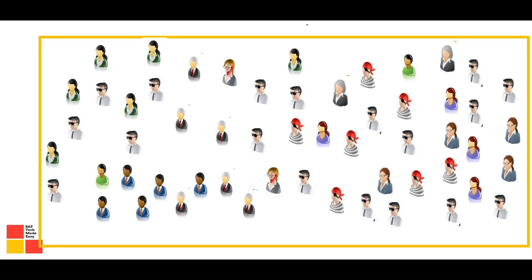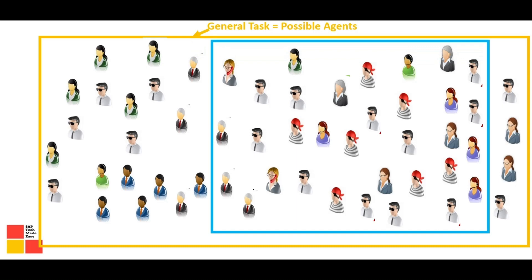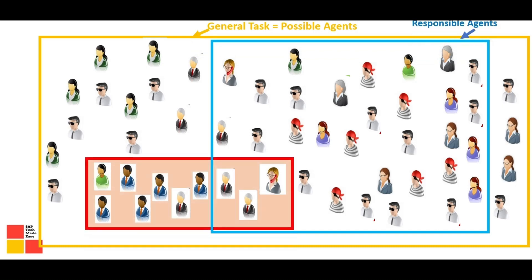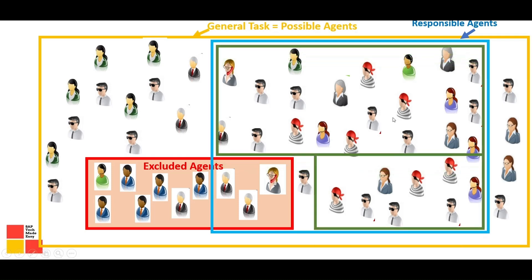If you have selected a task as a general task, every user in the organization will be the possible agents. If you have also defined some people as responsible agents, and further defined some people as excluded agents, then the actual agents or recipients or selected agents will be those in the intersection. One important point: selected agents, recipients, and actual agents all refer to the same thing.